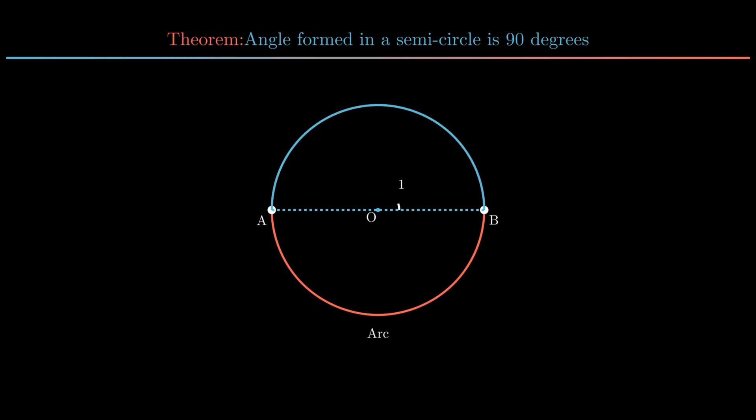Angle AOB measuring 180 degrees is formed at the center point O. Now consider a point P on one of the semicircles. Join the endpoints of the diameter with point P. Angle APB so formed will always be equal to 90 degrees.